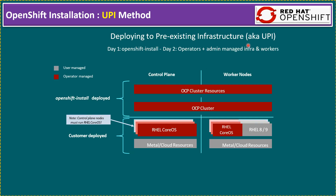UPI means deploying to pre-existing infrastructure. Pre-existing means we first need to create six VMs and make them ready — either six VMs or six bare metal nodes (three for master nodes, three for worker nodes). That is the reason in this diagram you see gray color, which means user-managed — that means pre-existing infrastructure, also known as UPI (User Provisioned Infrastructure). The name clearly says the user already prepares the infrastructure — physical servers or cloud-based instances — either on-premises or private cloud.